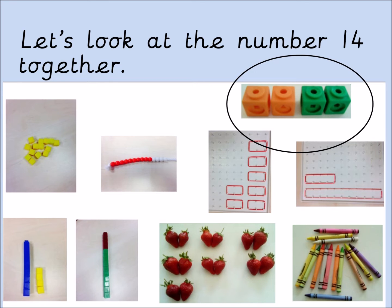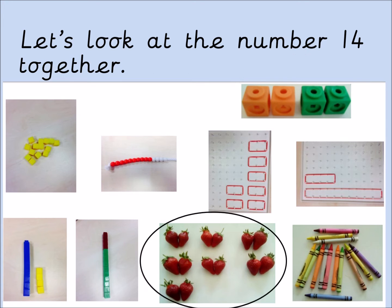Here the orange cubes represent 5 and the green cubes represent 2. Two 5's and two 2's has a total of 14. Here I've grouped strawberries into 2.